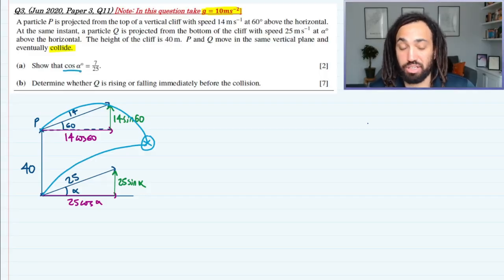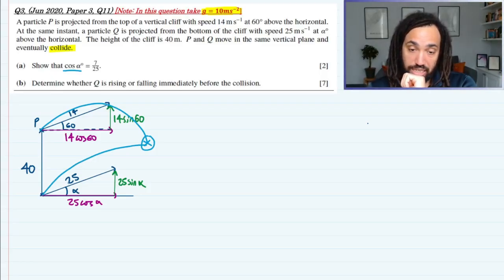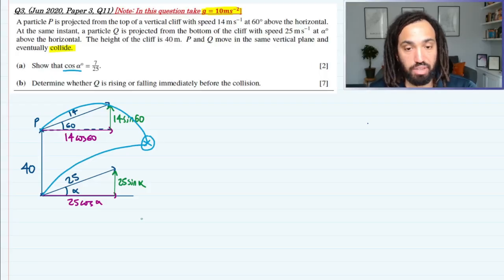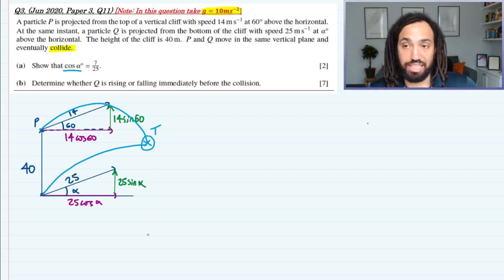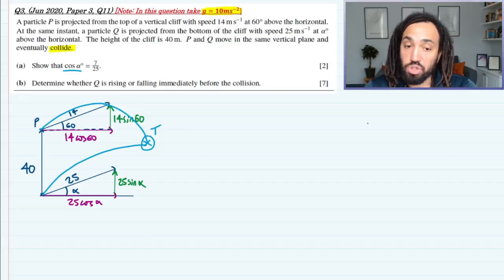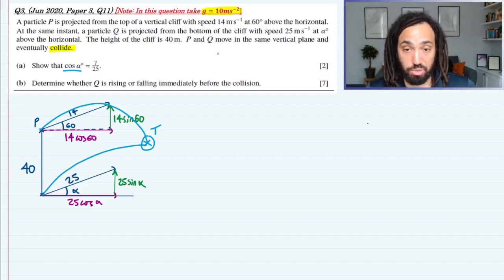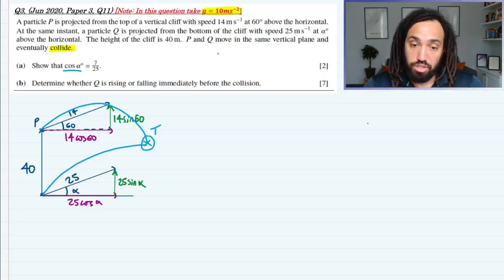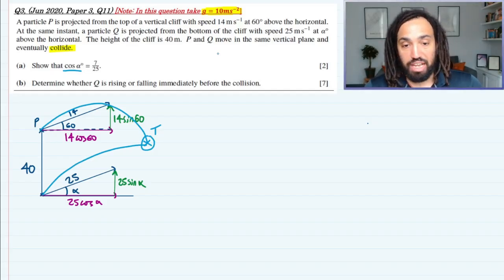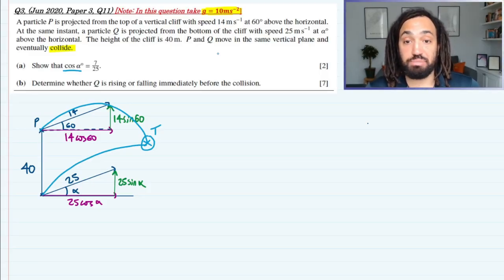If we look at the horizontal, the clue is they've said cos alpha, so that gives us a clue we should be looking at the horizontal here. They've traveled the exact same distance horizontally, and because they meet at this particular moment in time, they've also taken the exact same amount of time to get there. Now the velocity in the horizontal doesn't change because the acceleration in our projectiles questions is zero in the horizontal because we don't assume there's any air resistance. So the speeds don't change and they take the same amount of time, so their speeds must be the same.